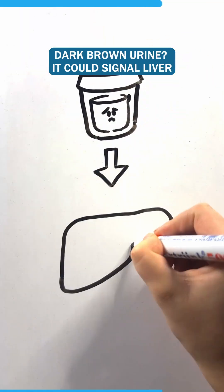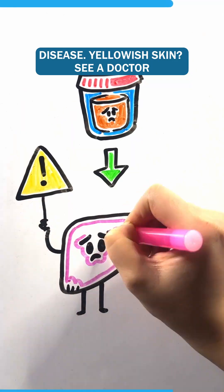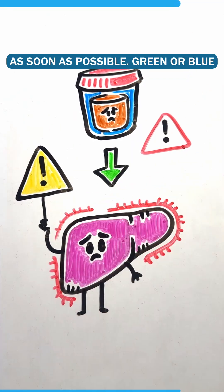Dark brown urine, it could signal liver disease. Yellowish skin, see a doctor as soon as possible.